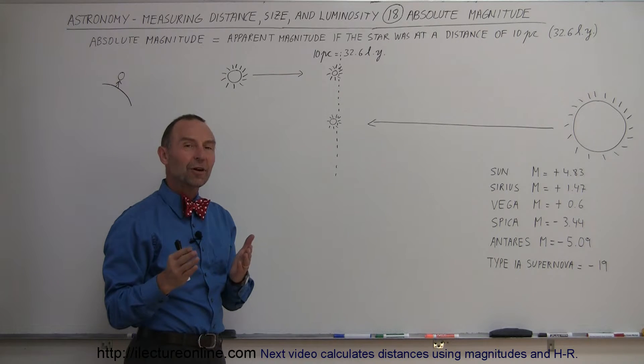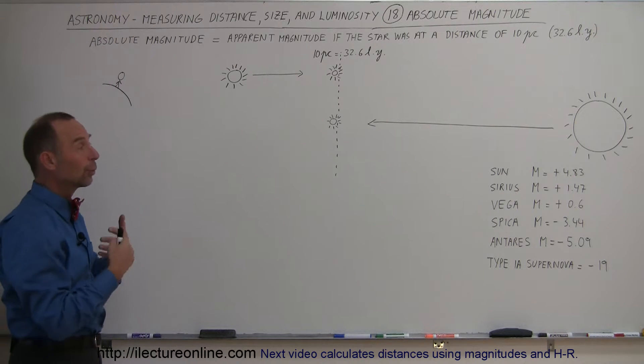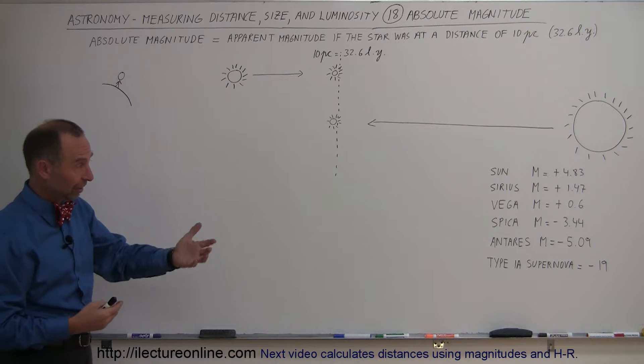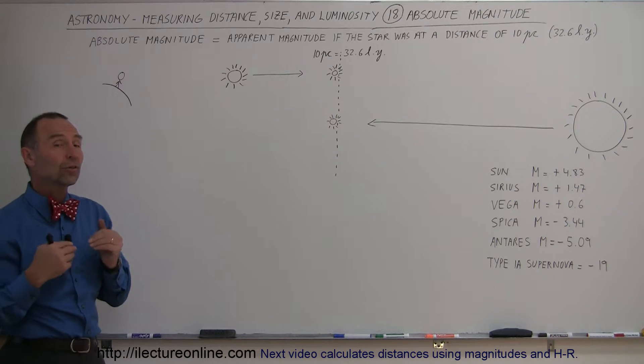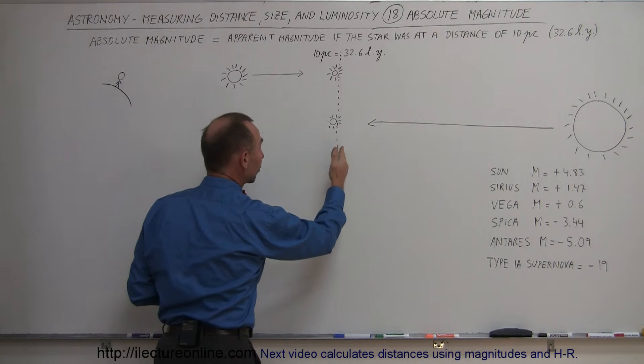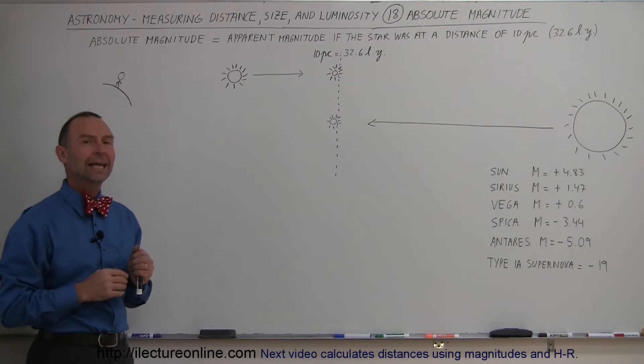Most stars, however, are less bright than the sun, so they have absolute magnitudes of even greater numbers, plus 5, plus 6, plus 7, plus 8, plus 9. So you can see that the vast majority of the stars, if they were placed at a distance of 10 parsecs away, or 32.6 light years, would not be visible to us to the naked eye.